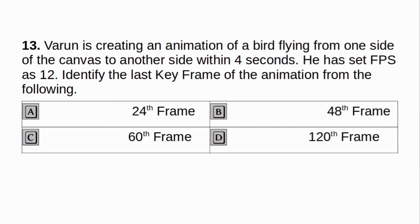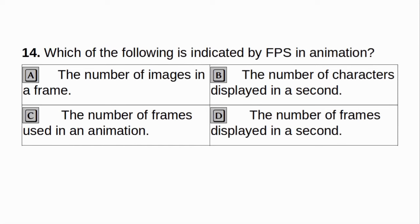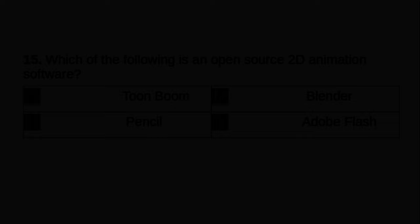Byron is creating an animation of a bird flying from one side of the canvas to another side within 4 seconds. He has set FPS as 12. Identify the last keyframe of the animation. A. 24th Frame. B. 48th Frame. C. 60th Frame. D. 120th Frame. Answer: B. 48th Frame. Which of the following is indicated by FPS in animation? A. Number of images in a frame. B. The number of characters displayed in a second. C. The number of frames used in an animation. D. The number of frames displayed in a second. Answer: D. The number of frames displayed in a second.